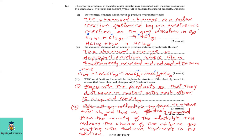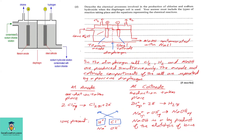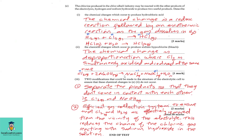Part e, question three: Two modifications to the structure of the electrolytic cell to ensure that the chemical changes in part two do not occur. First, separation of products so they do not come into contact with each other — preventing chlorine and sodium hydroxide from mixing and forming bleach. Second, an efficient gas collection system to ensure that Cl₂ and H₂ are removed effectively from the vicinity of the electrolyte, reducing the chance of chlorine gas reacting with sodium hydroxide.